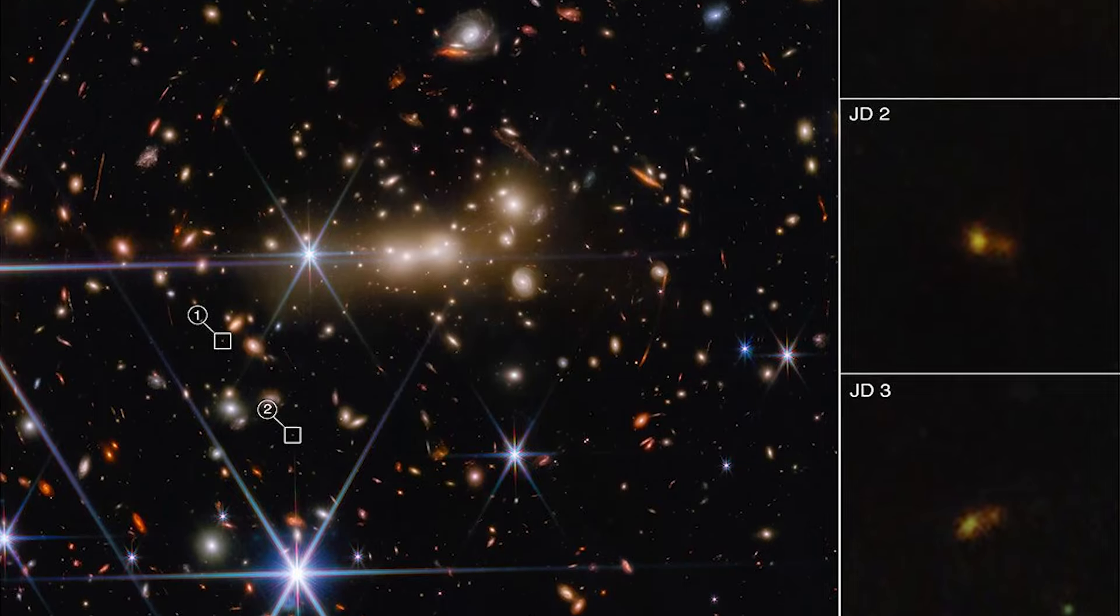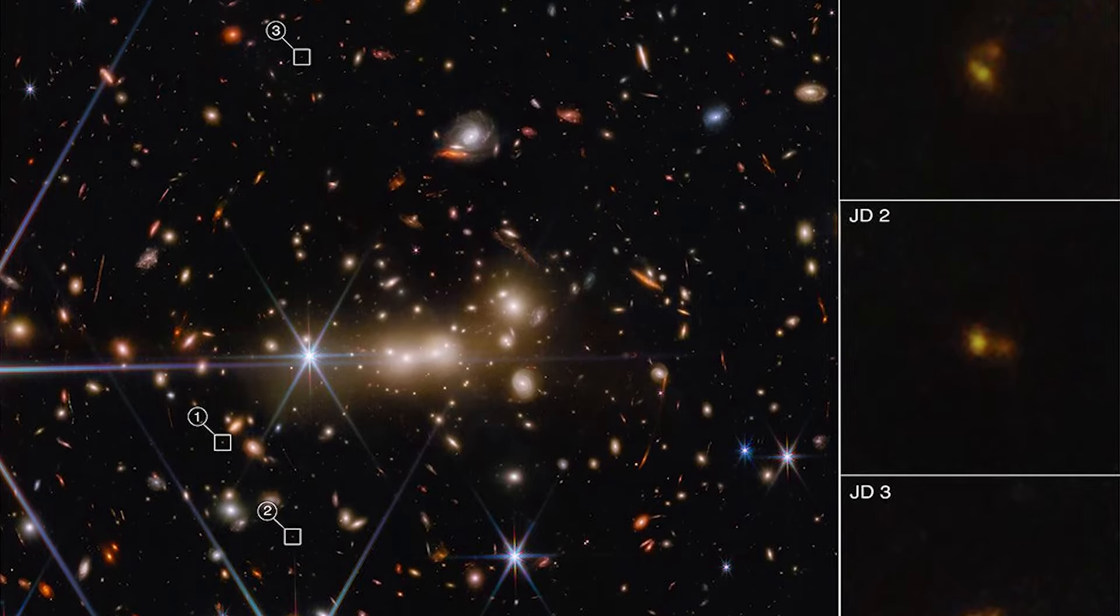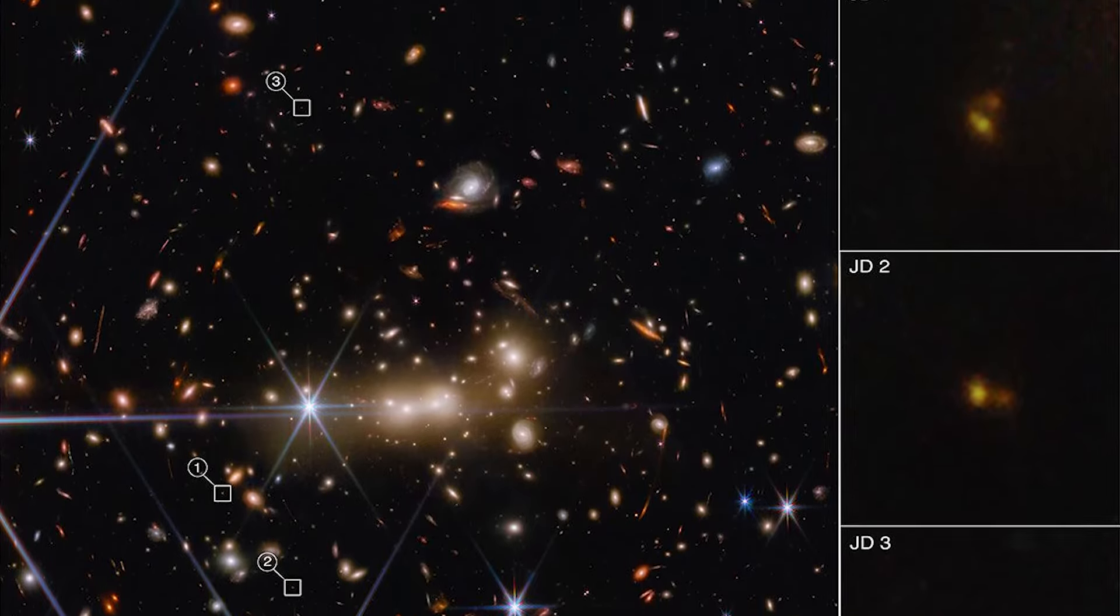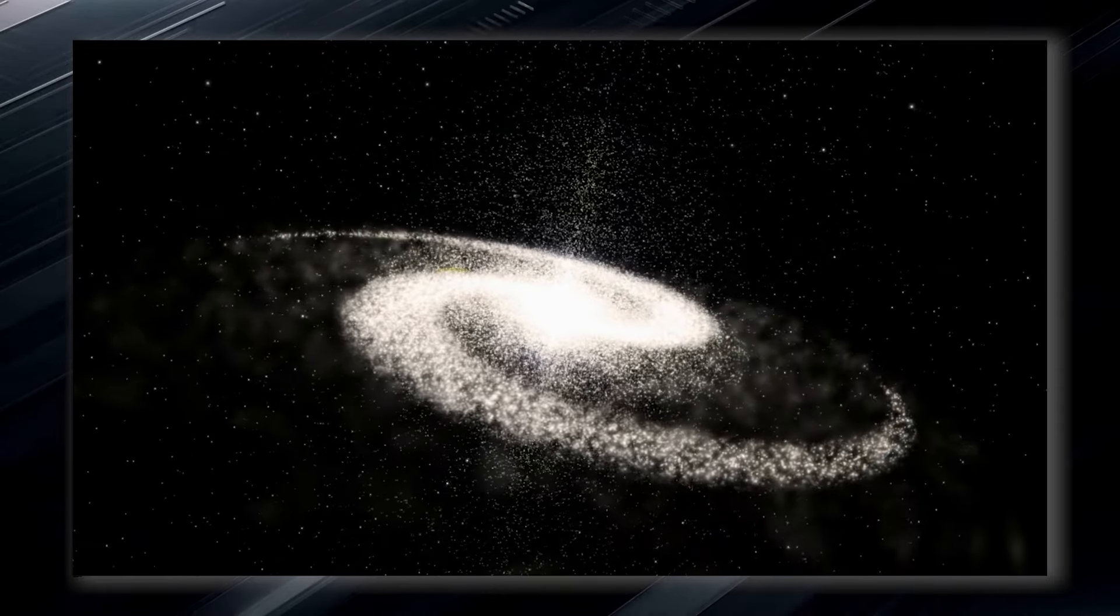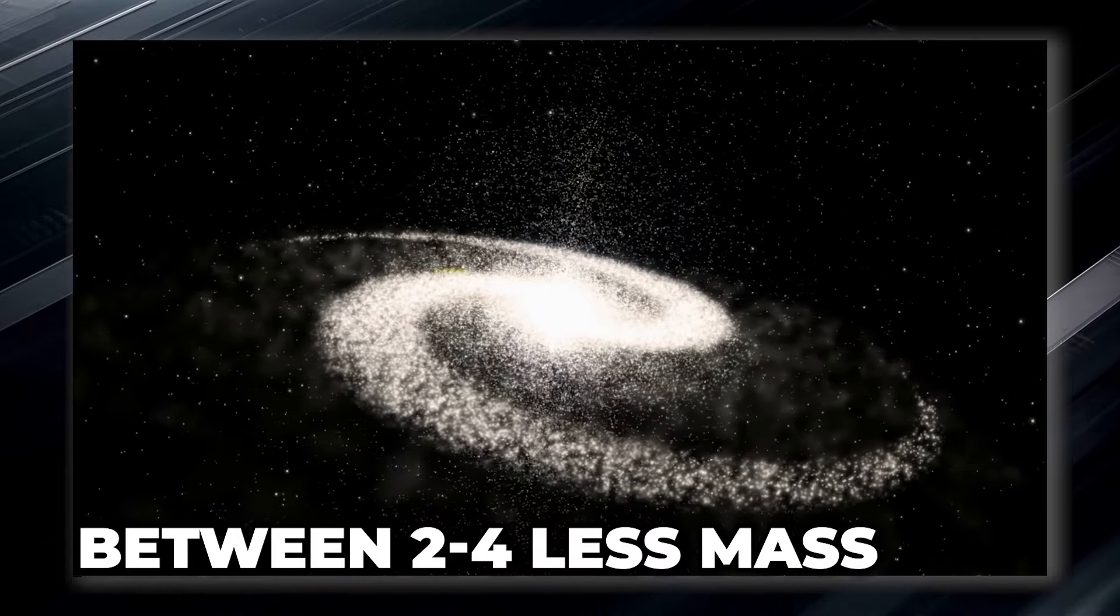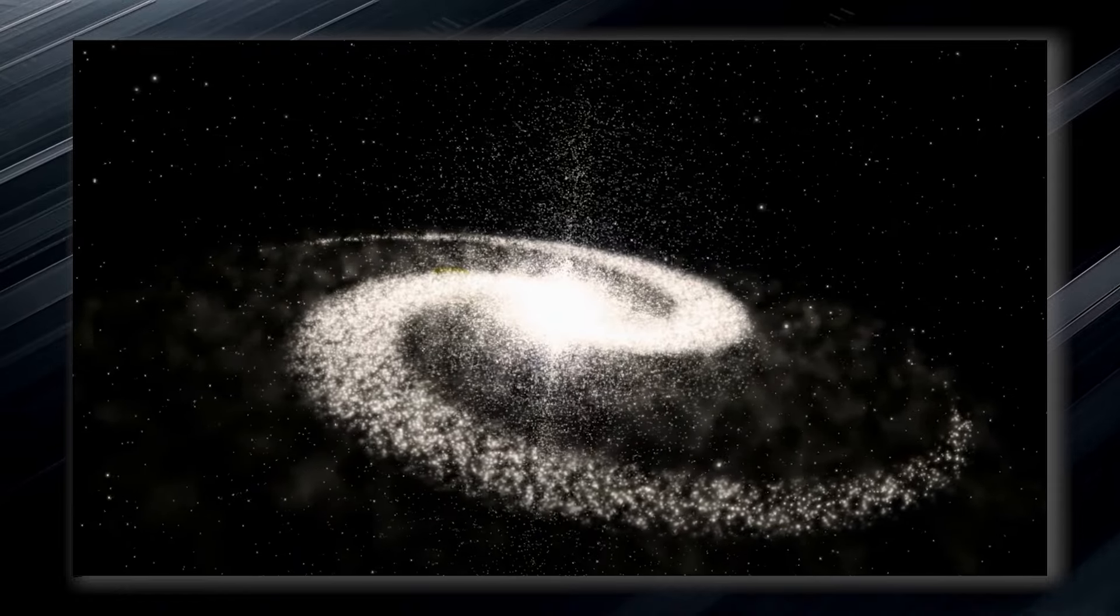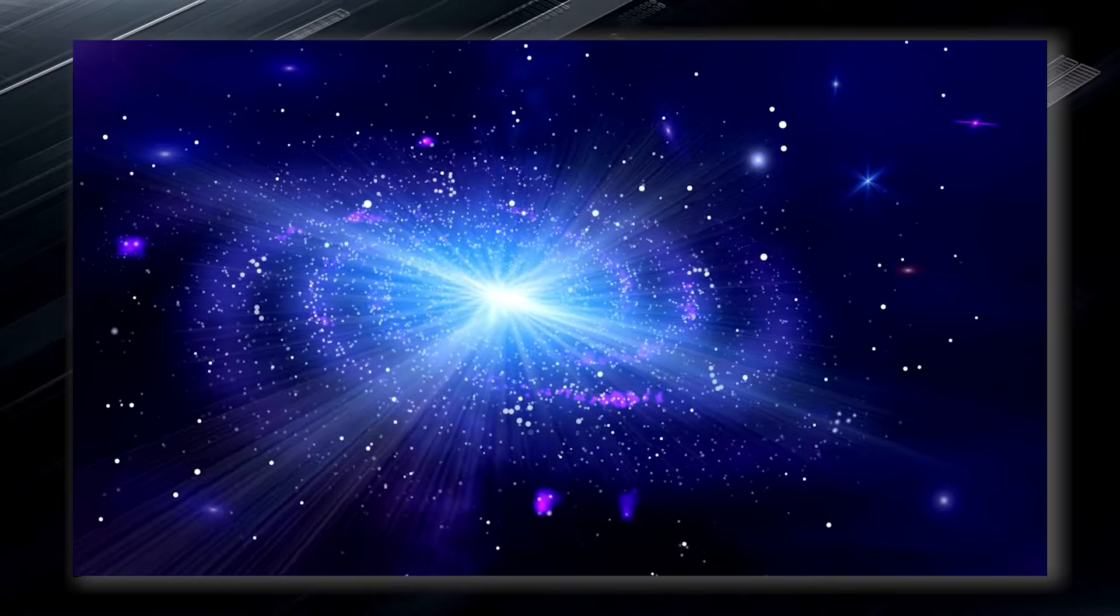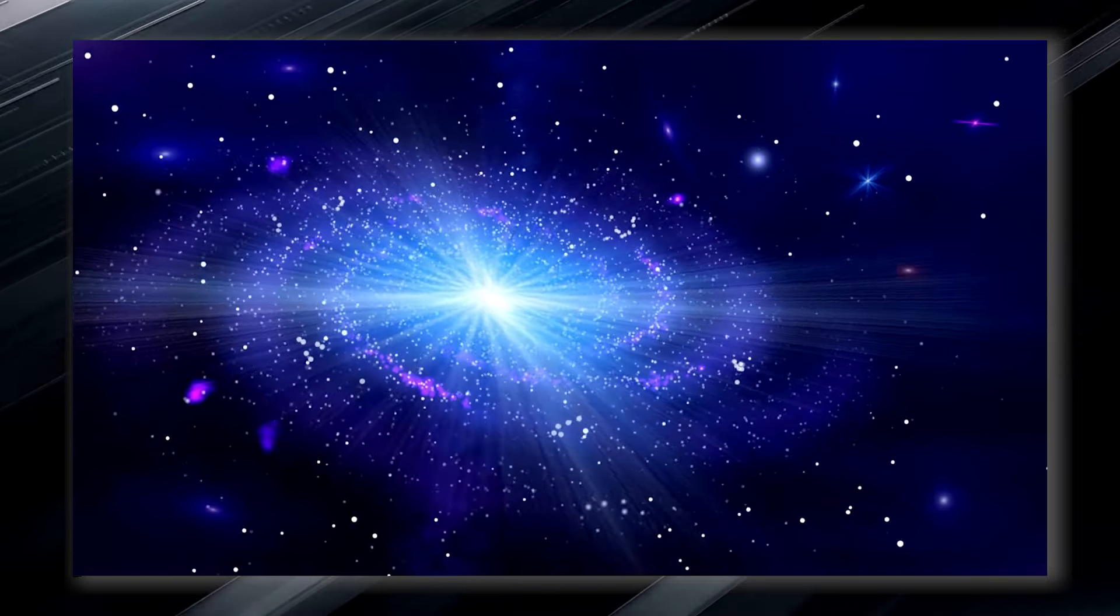These red dots revealed in the images captured by the James Webb Space Telescope appeared to be 50 times more massive, according to Joel Leja. The most massive galaxies in our sample are estimated to have masses between 2 and 4 times less than that of the Milky Way. This discovery is astonishing, since galaxies as massive as ours were found when the universe was only 3% of its present age.